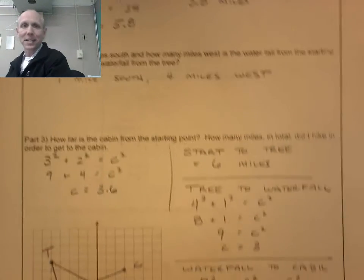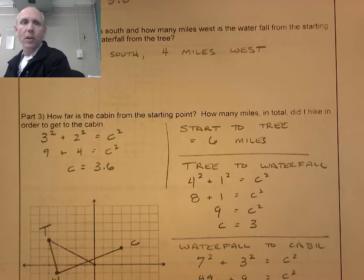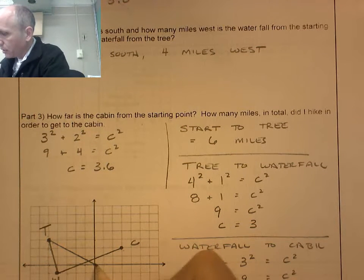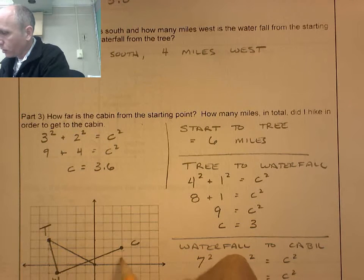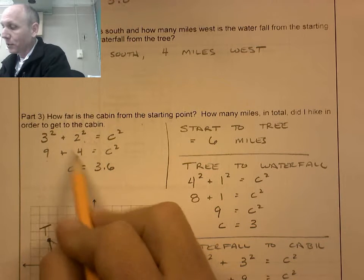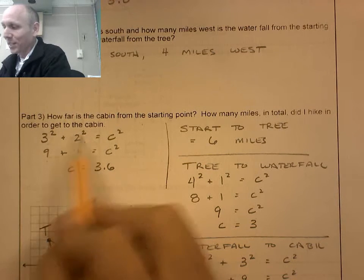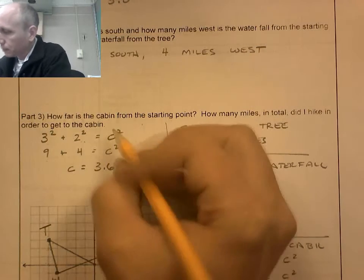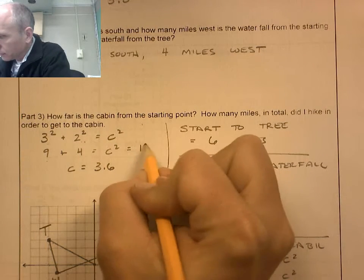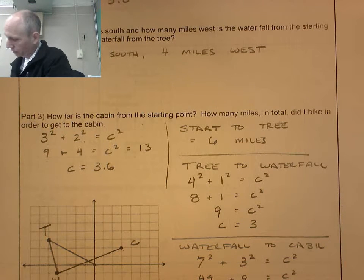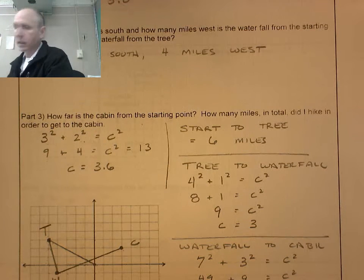The next one is a bunch of problems in one. How far is the cabin from the starting point? The cabin is 1, 2, 3 over, 2 up. 3 squared plus 2 squared, 9 plus 4. So 9 plus 4 is 13. And the square root of 13 is 3.6.